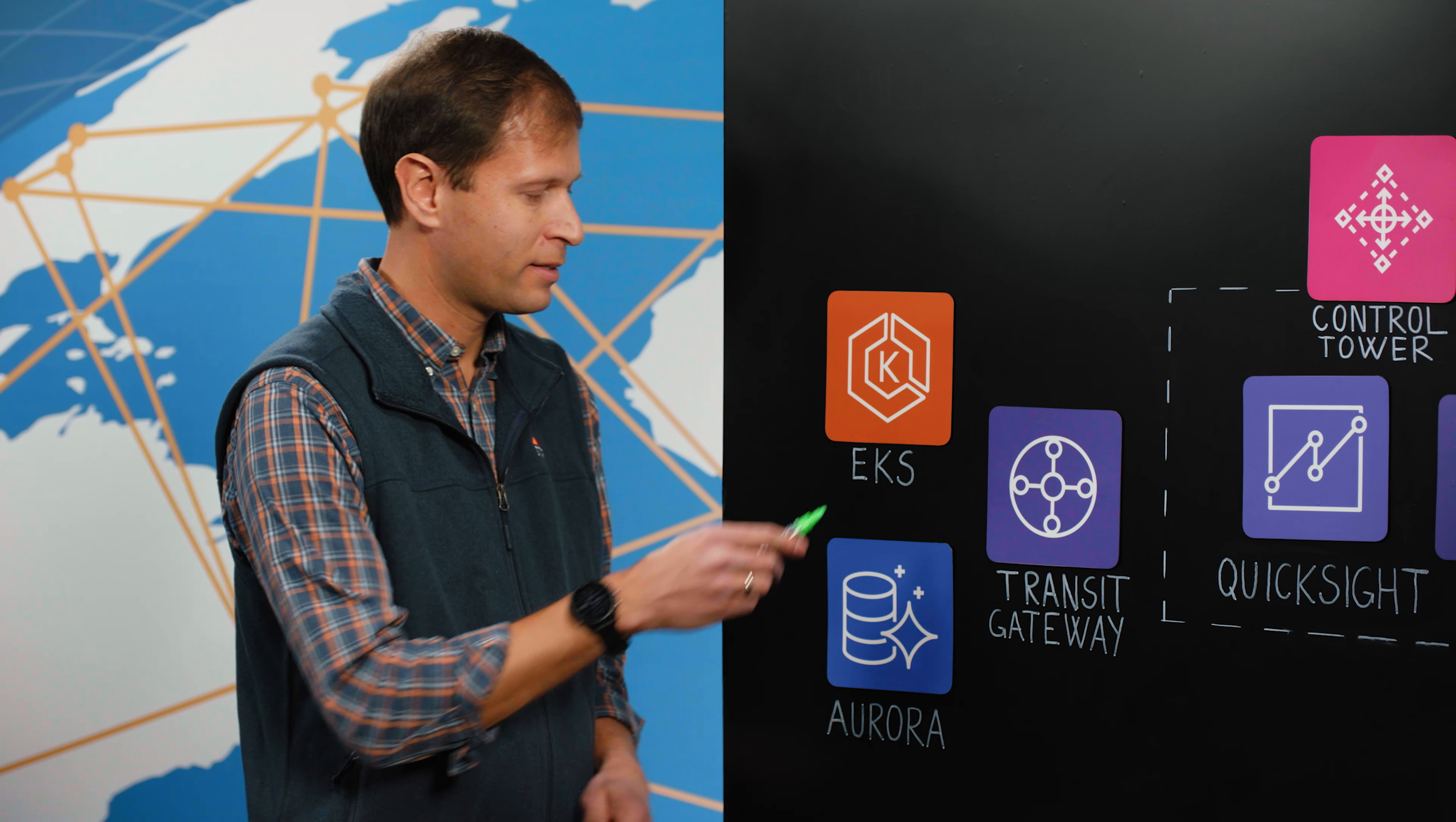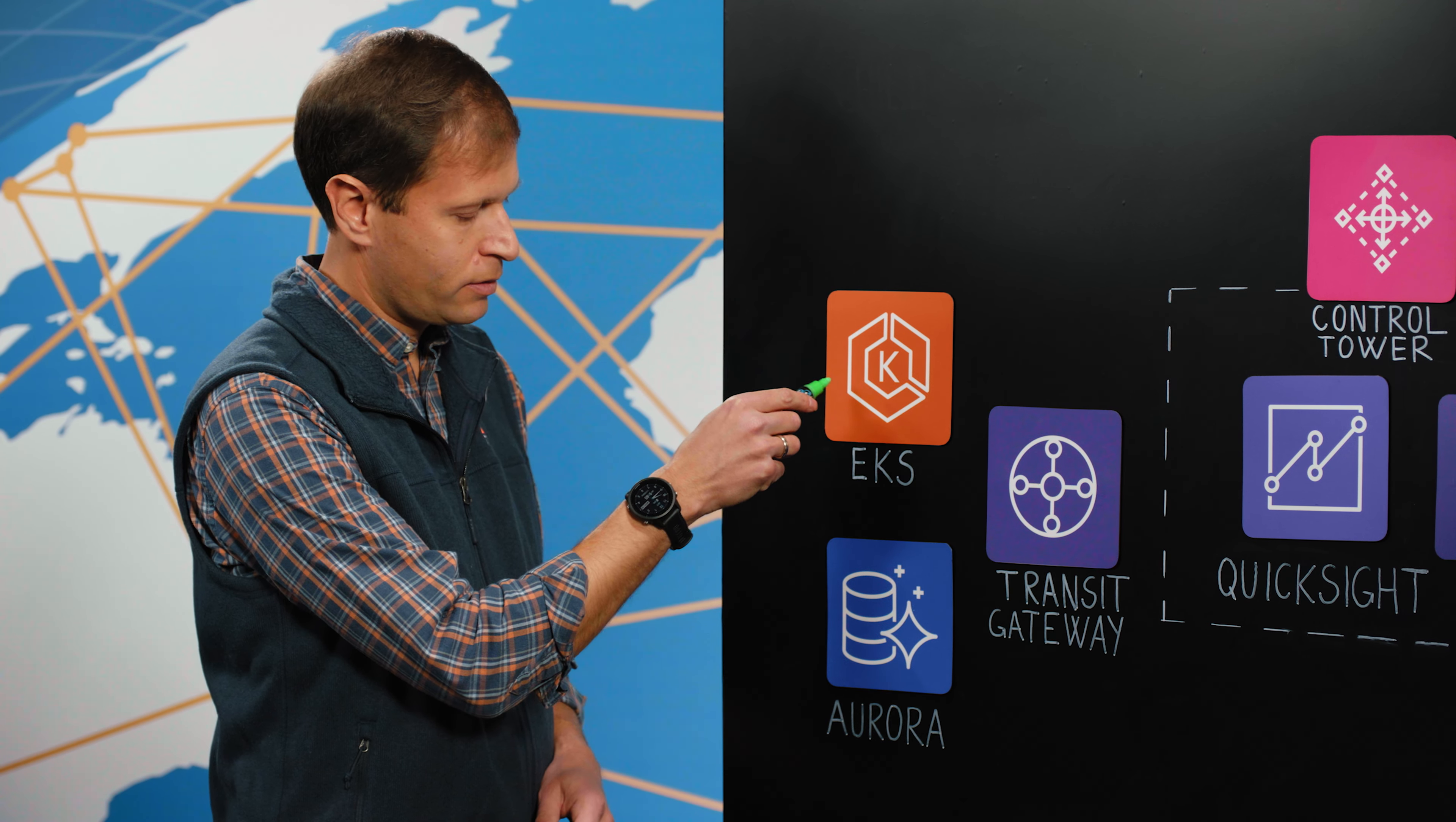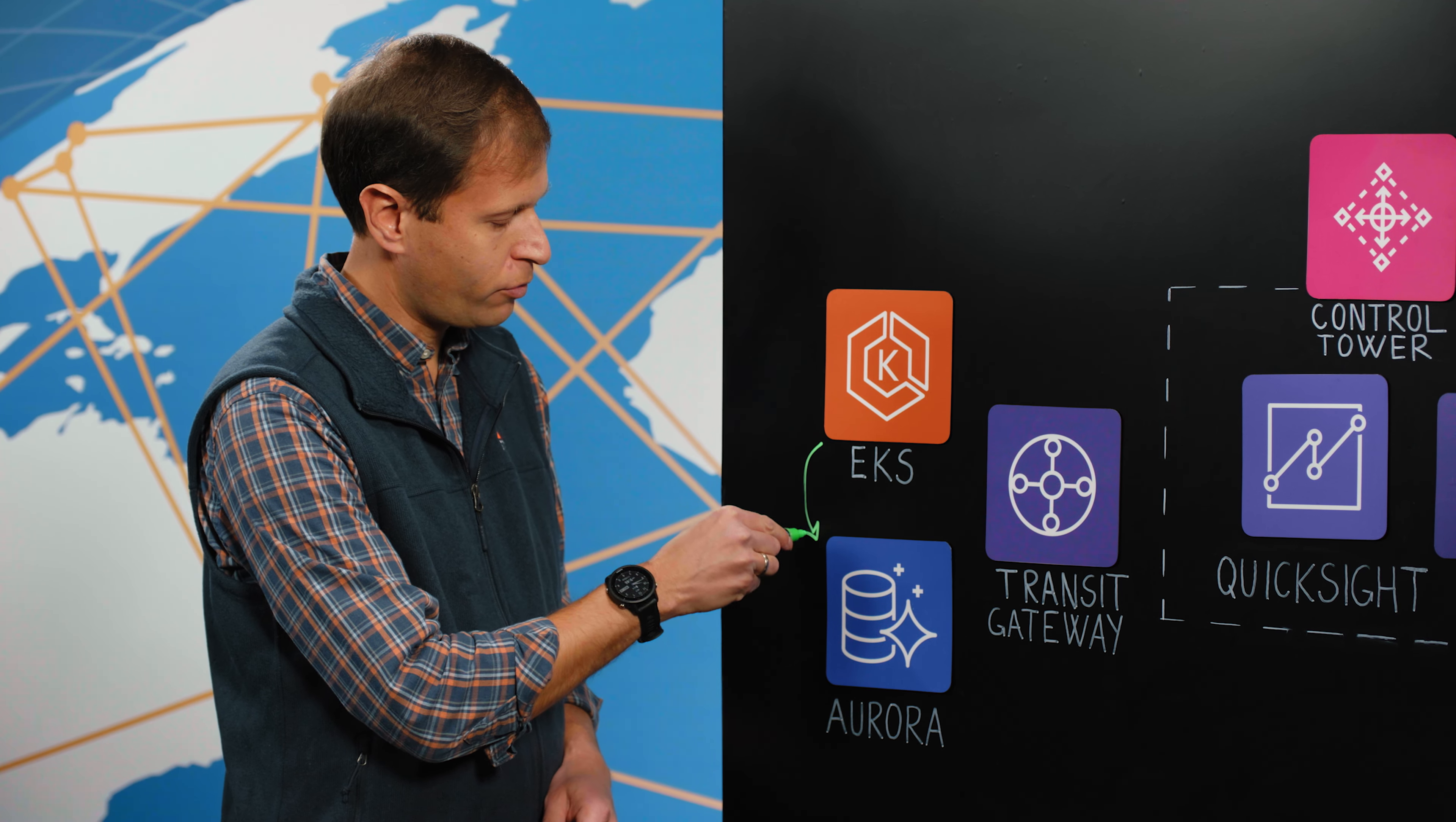All right, so the multi-tenant SaaS application runs as various pods on EKS cluster and then we have Postgres Aurora for the database.